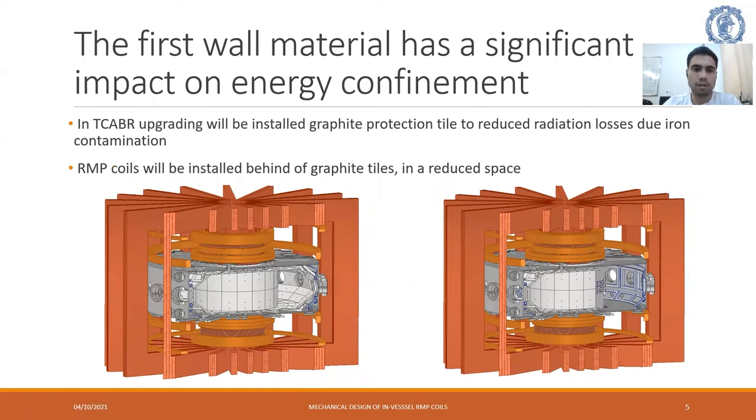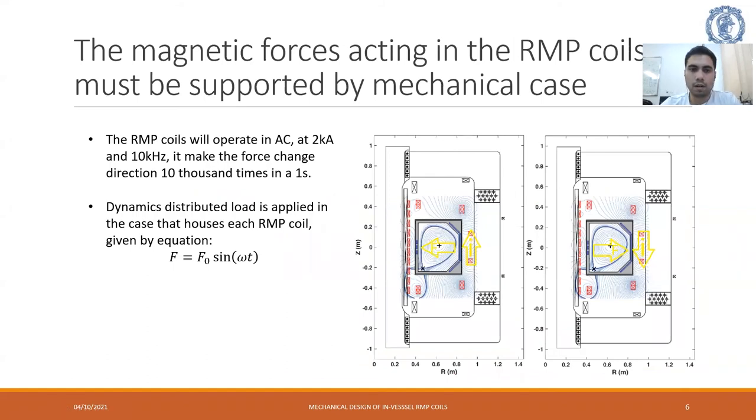In the TCABR upgrade will be installed graphite protection tile to reduce radiation losses due to iron contamination. RMP coils will be installed behind the graphite tile in a reduced space. We can see CP coils behind the graphite protection tile. The magnetic force acting in the RMP coil must be supported by mechanical case. The RMP coils will operate in AC at 2kA and 10kHz, which makes the force change direction 10,000 times in one second. Dynamic distributed load is applied in the case that houses each RMP coil. When current is up, we have the force pushing in the C coils and when current is down, we have the force pushing out the C coil and these change 10,000 times in one second.